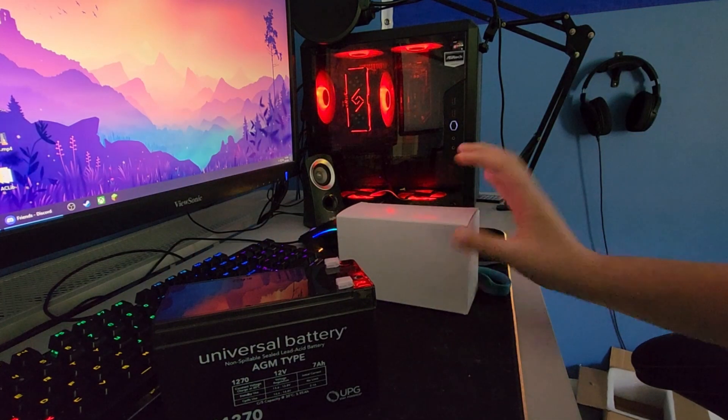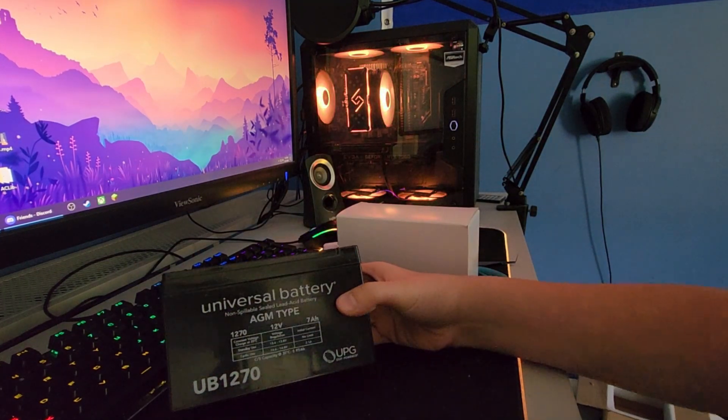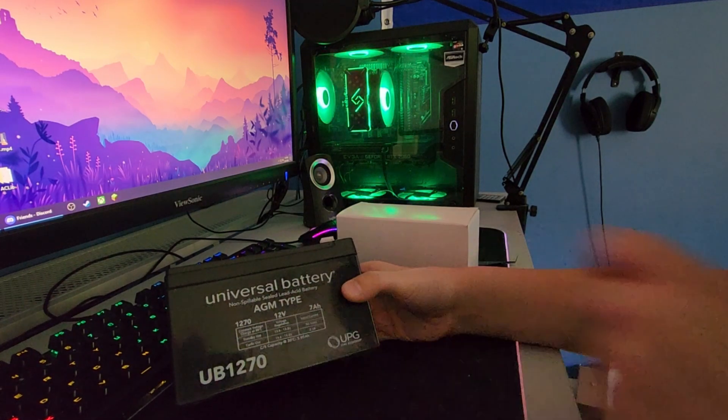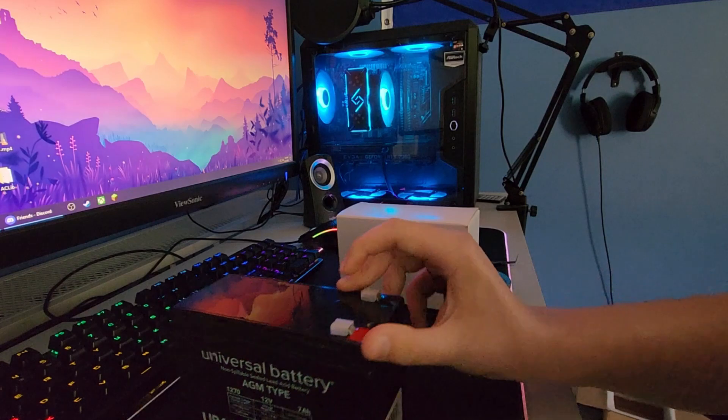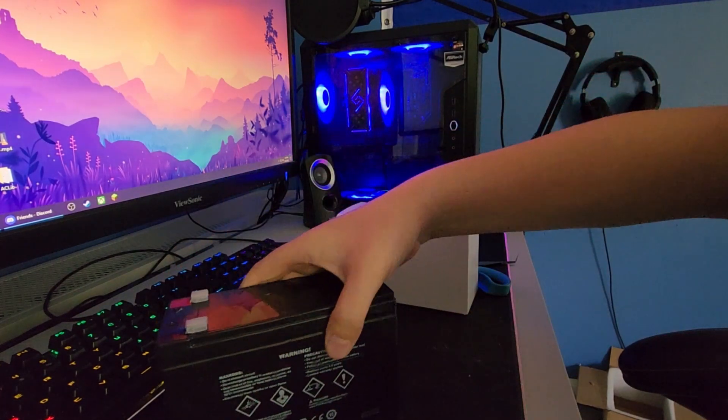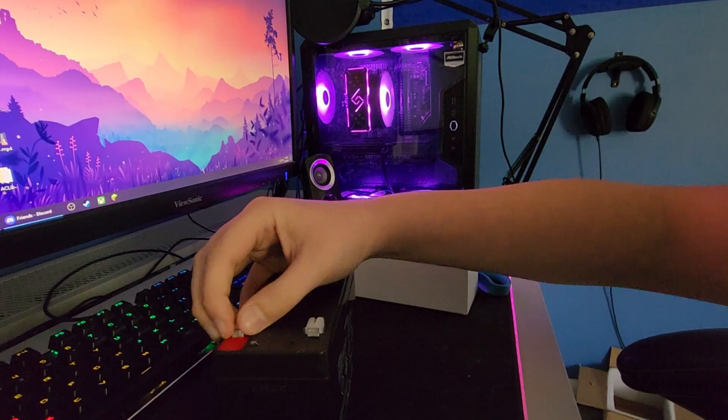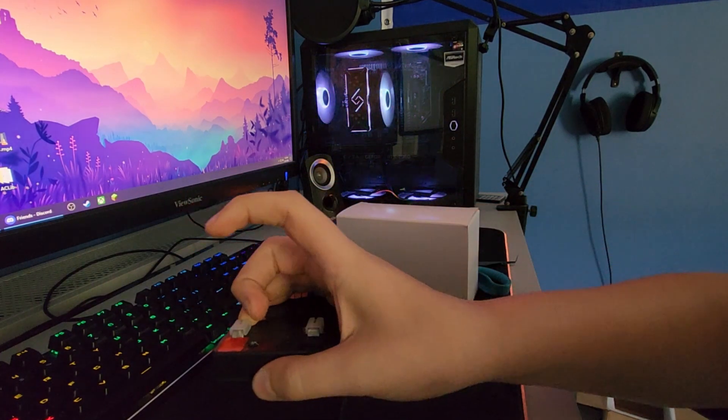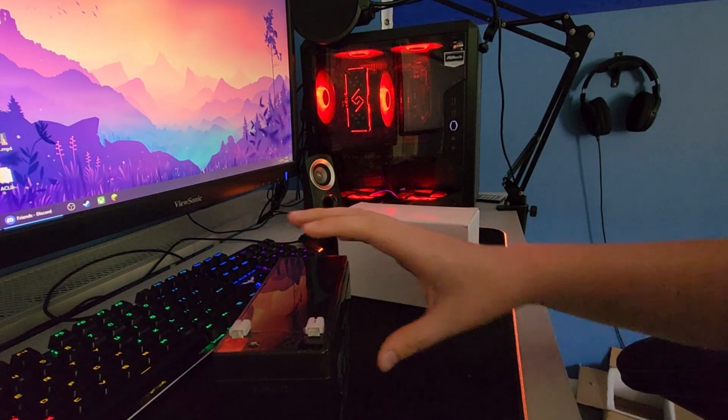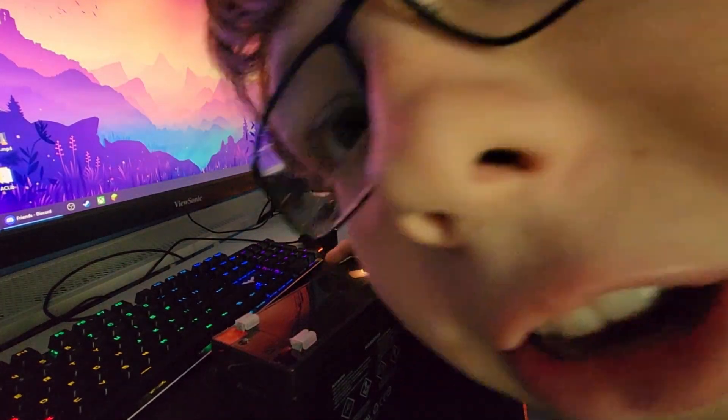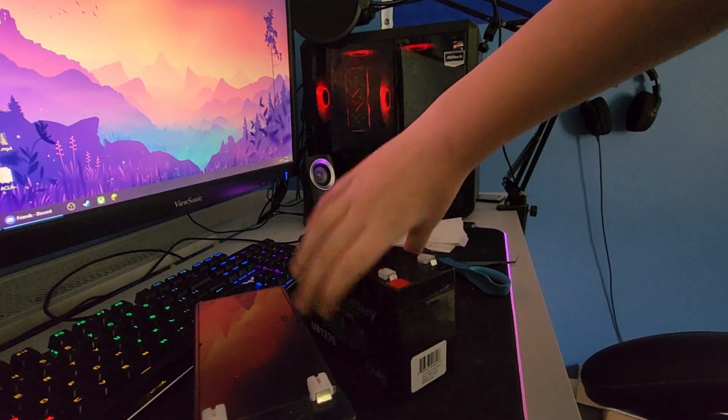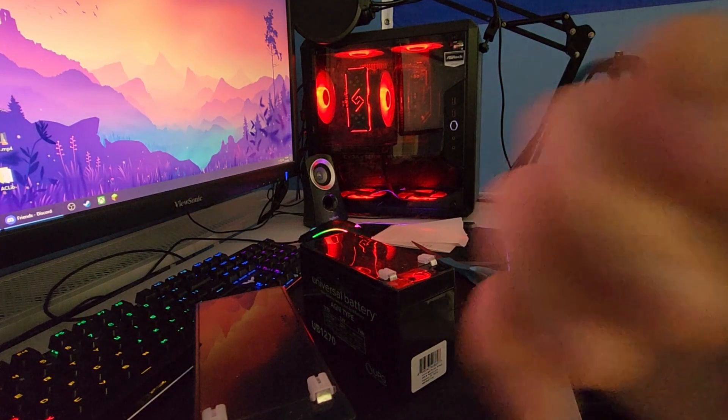Here it is. Non-spillable sealed lead acid battery, 12 volts 7 amp hours. These are made for gate openers, but these will work with the fire alarm panel. There's some little guards over the terminals. That's pretty smart. And another one of the same thing. Alright, let's go install this in the panel.